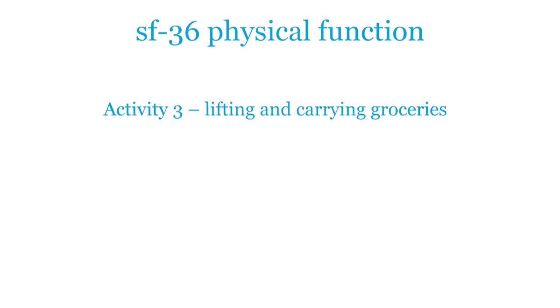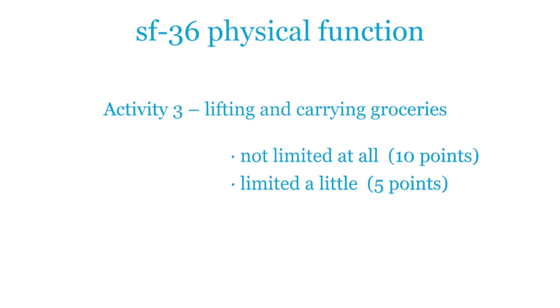Patients could choose between saying that they were not limited at all, for which they got 10 points, limited a little, 5 points, or limited a lot, no points. This means that their final scores would go up in multiples of 5.